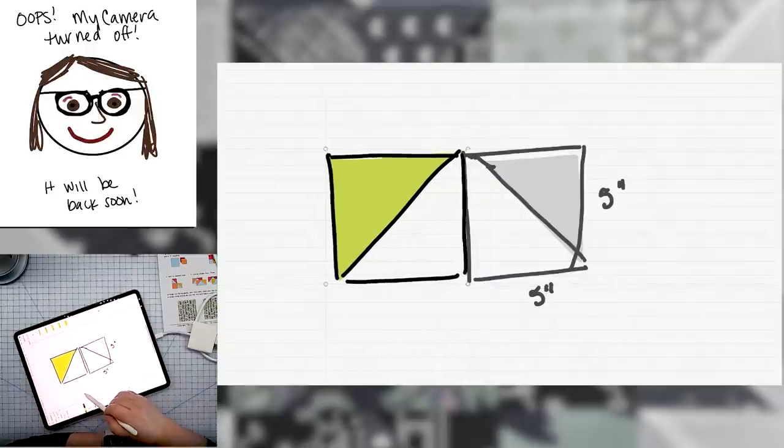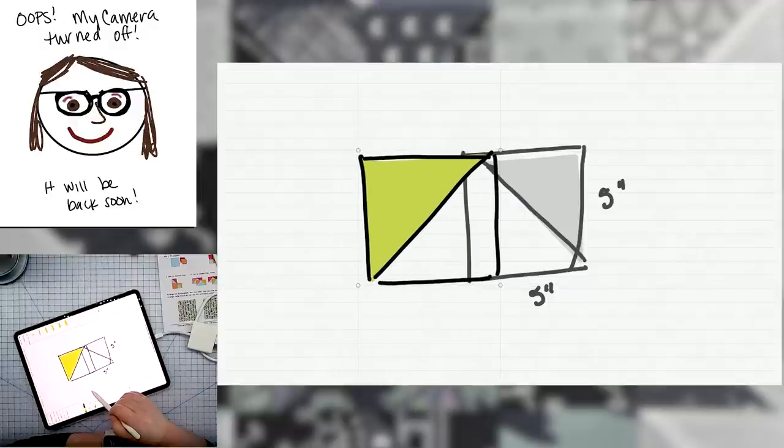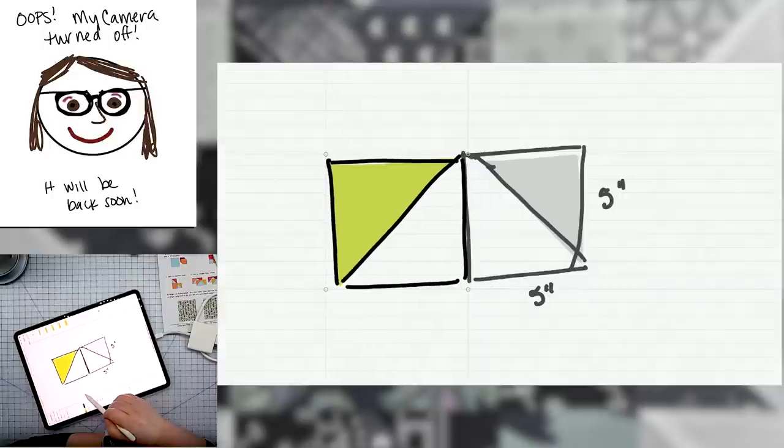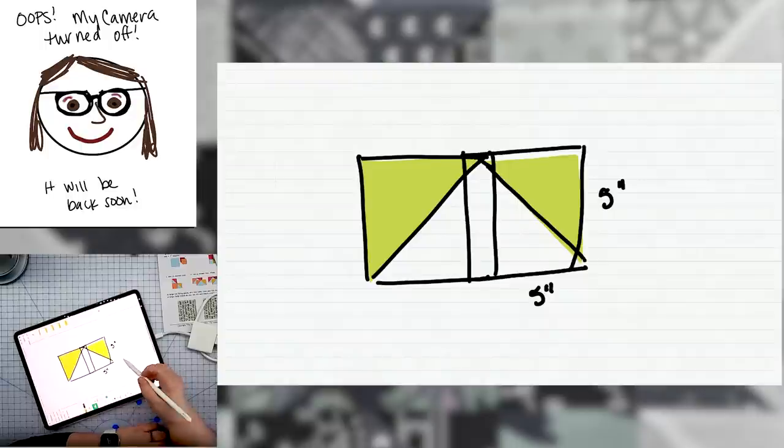If we look at what we're actually doing here when we seam these together is that we're just removing a seam allowance. We're sewing these two blocks together, which removes two seam allowances from these half square triangles. So we are just removing a half an inch from this length of our side.